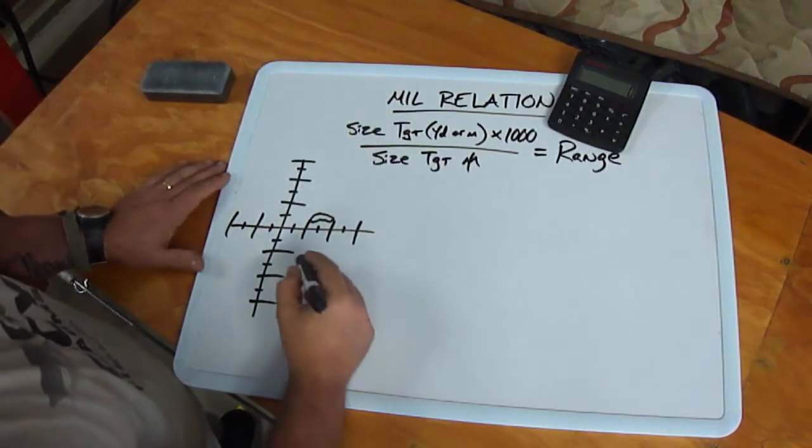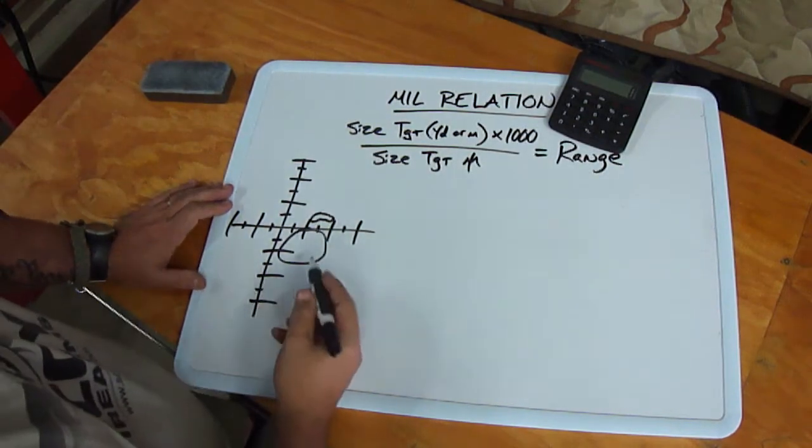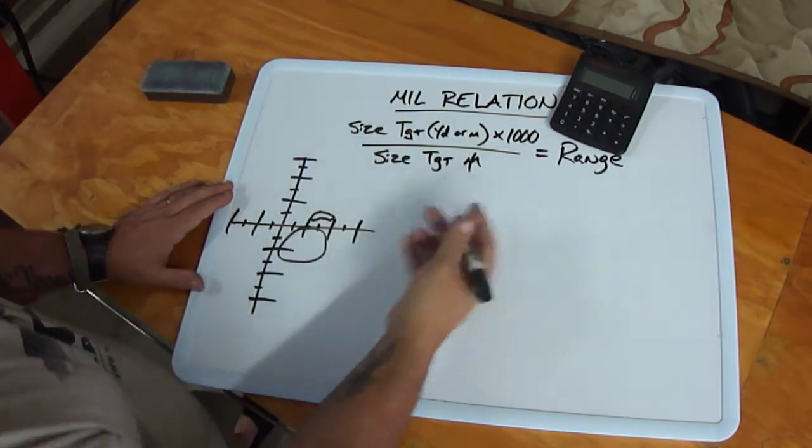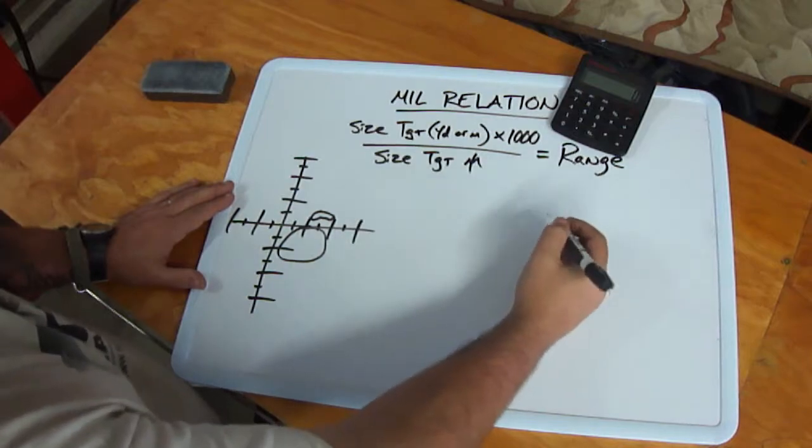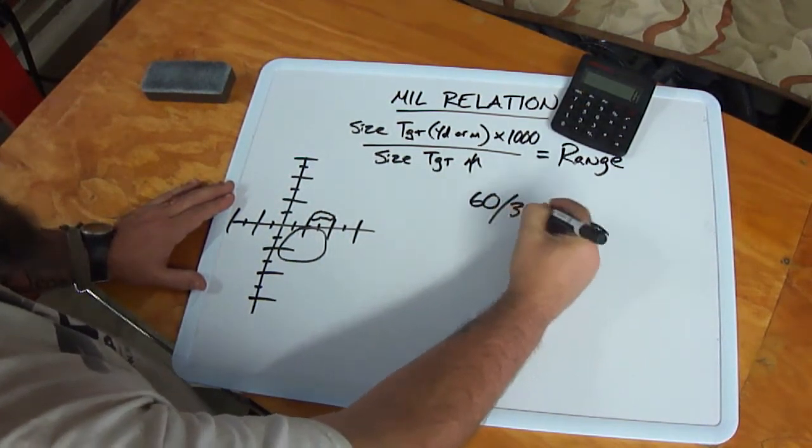We'll do another one, we'll say, whatever, this is our target here. And we'll say that that's 5 feet. Yeah, it's a 5 foot circle. I don't know what it is, but it's a 5 foot circle.